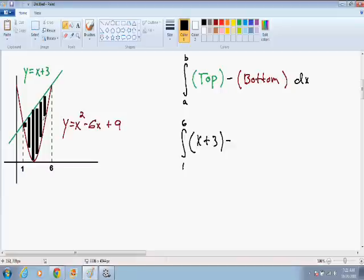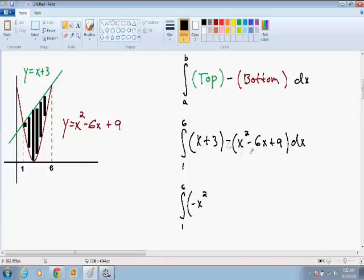And the bottom of the rectangles, every one of them is touching the red function which is x squared minus 6x plus 9 dx. So if we add and subtract like terms, this integral can be simplified as negative x squared. We have a positive x minus a negative 6x which becomes plus 7x. We have a positive 3 minus positive 9 which becomes negative 6 dx.